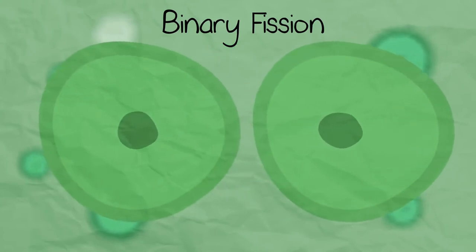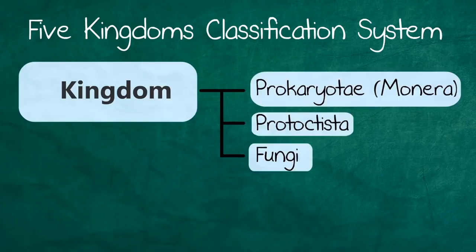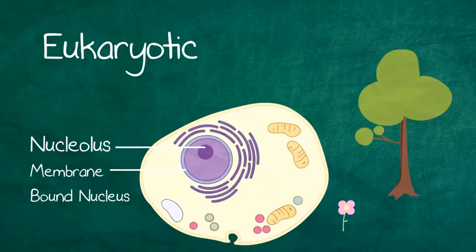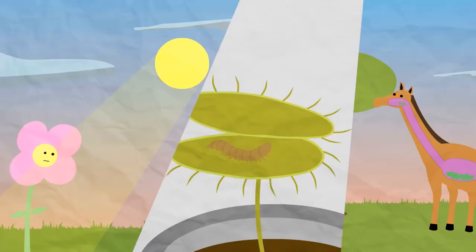So from this video you should know kingdoms break down into five groups based upon different characteristics including whether they have cell walls, are eukaryotic or prokaryotic, and how they get nutrition.